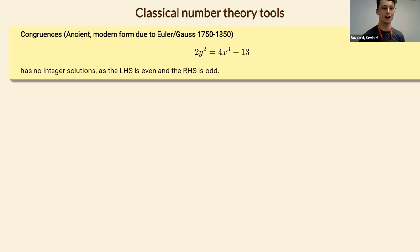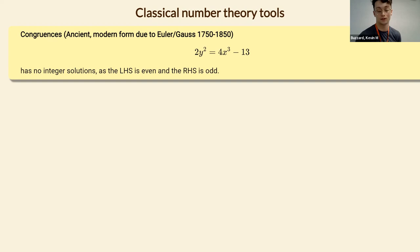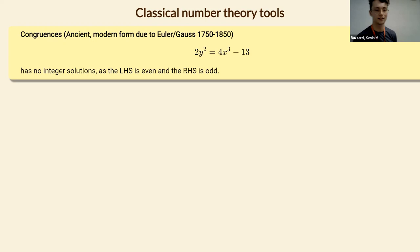Here's an equation similar to y squared equals x cubed minus 13, except with a two and a four in front. In this case there are no integer solutions: the left-hand side is always even no matter what y is, and the right-hand side is always odd no matter what x is, because we've subtracted 13.